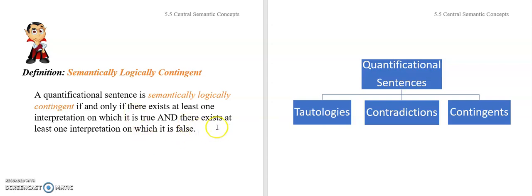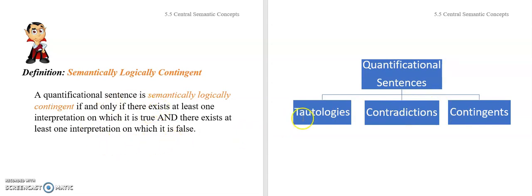Tautologies, contradictions, and contingents are mutually exhaustive and exclusive categories for sentences. So if your professor picks a quantificational sentence at random, it will fall into one and only one of these three categories. Either it's going to be a tautology, or a contradiction, or it's going to be contingent — and whichever one it is, it's neither of the others.